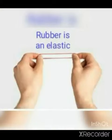Rubber is elastic. Elastic means it comes back to its original shape after being stretched. So rubber bands are made from it.